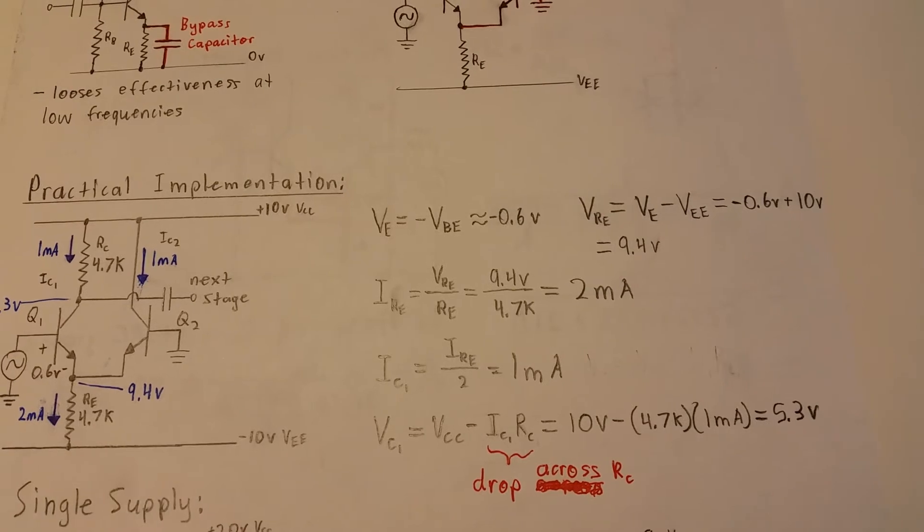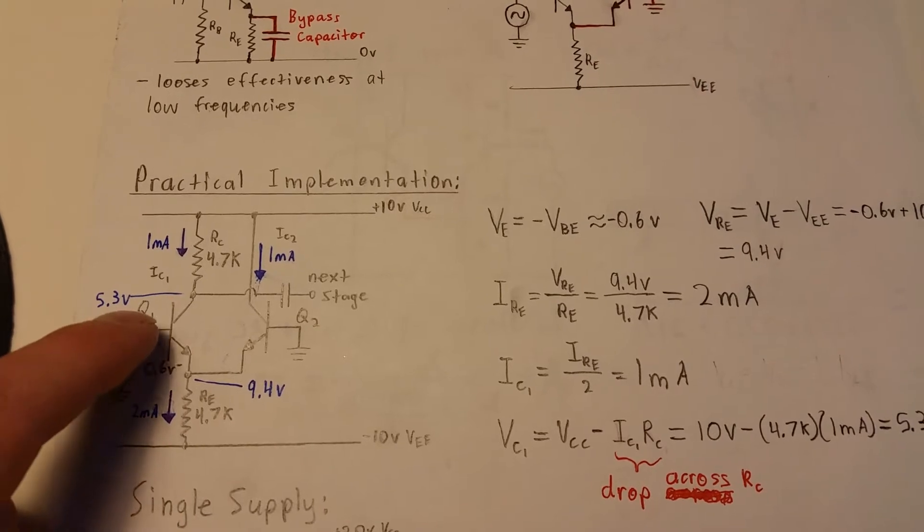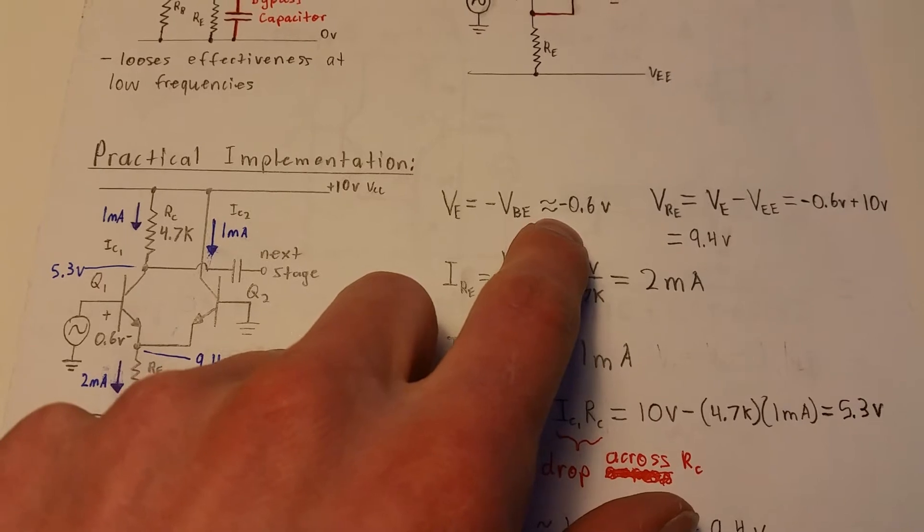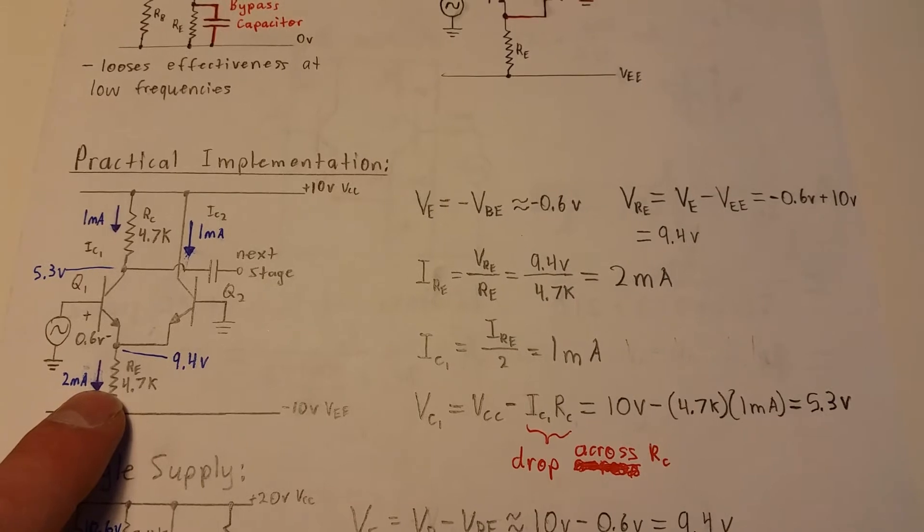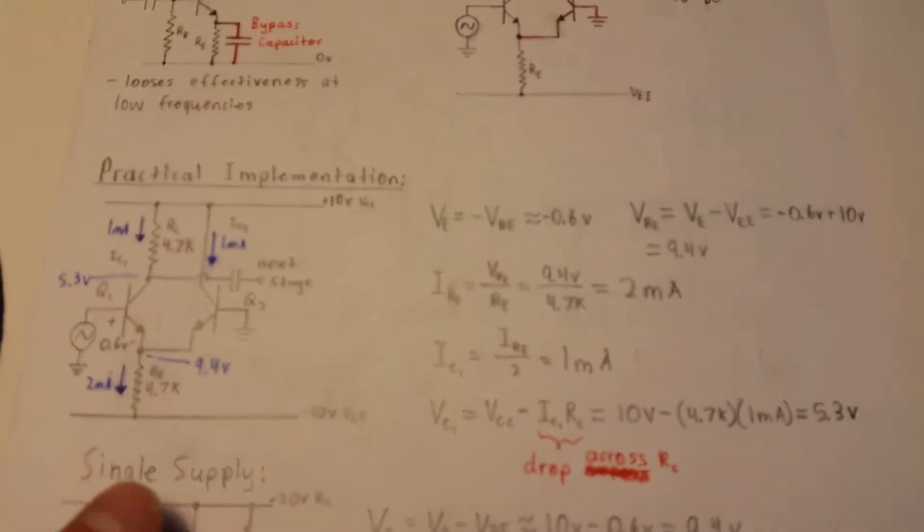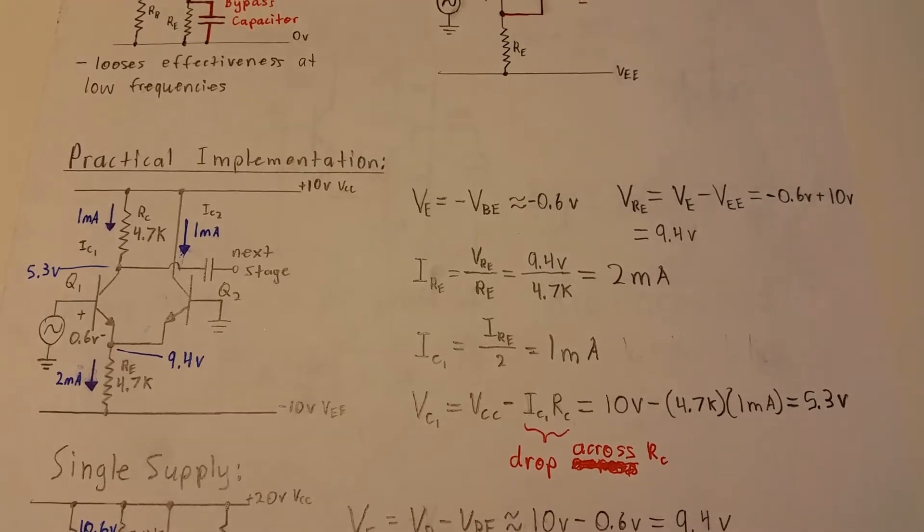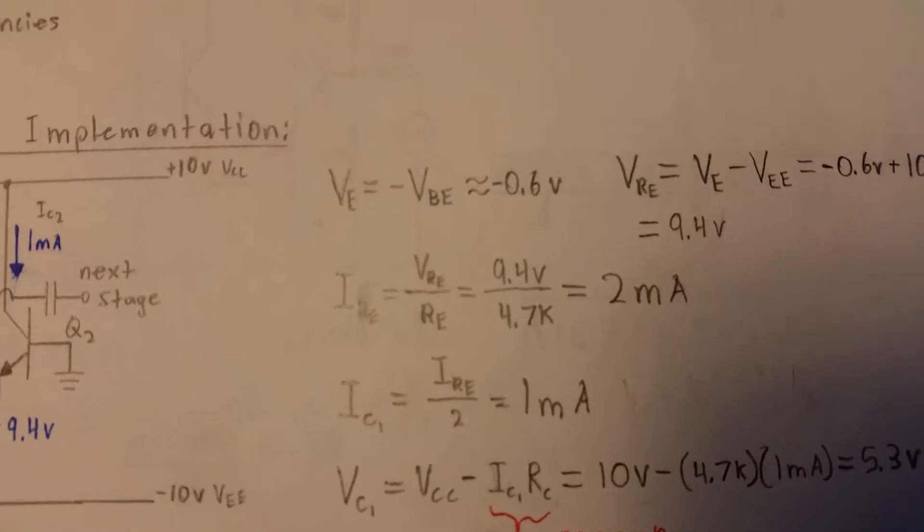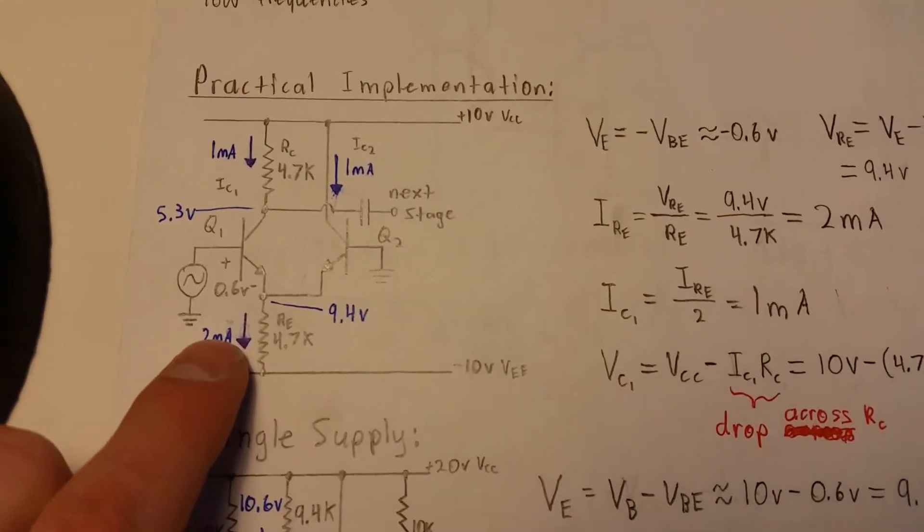Basically, you know that this emitter voltage is going to get that diode drop here down from zero volts, so it's minus 0.6 volts drop. The voltage across this resistor is going to be minus 0.6 minus the minus voltage supply, which is 10 volts. To find the current through that resistor, you just do Ohm's Law. And you'll get two milliamps through that resistor.